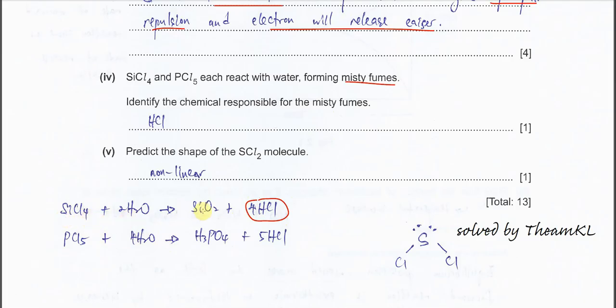When SiCl4 reacts with water, it forms a white precipitate, SiO2, and white fumes, HCl. PCl5 with water undergoes hydrolysis, forming two acids: phosphoric acid and HCl. Therefore, the HCl that forms is the misty fumes. Answer is HCl.